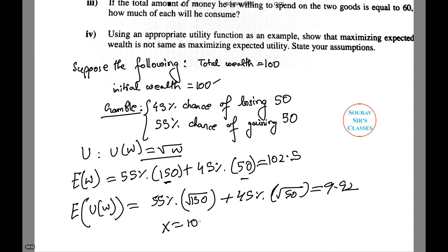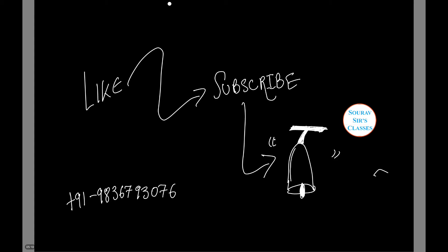If X were to maximize expected wealth, he should take the gamble. But if he were to maximize expected utility, he should not take the gamble. With this, we come to the end of another great video.